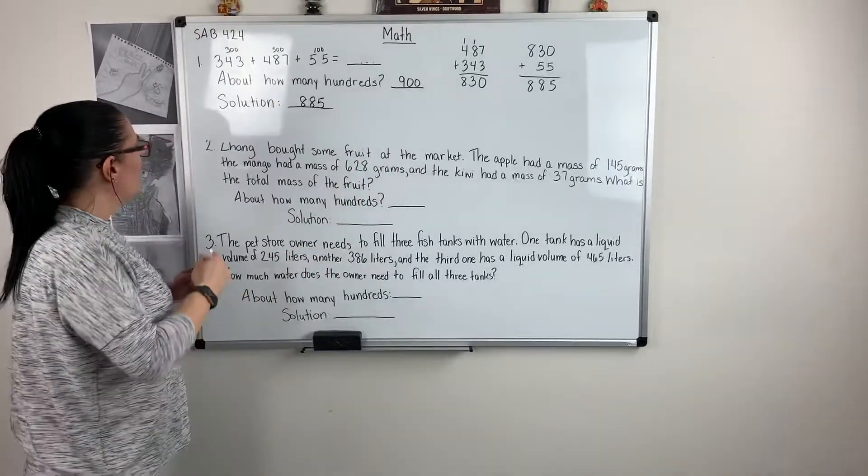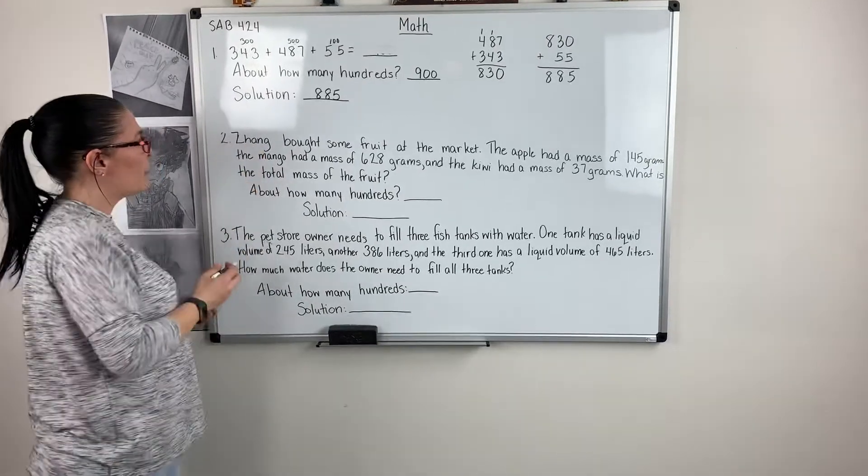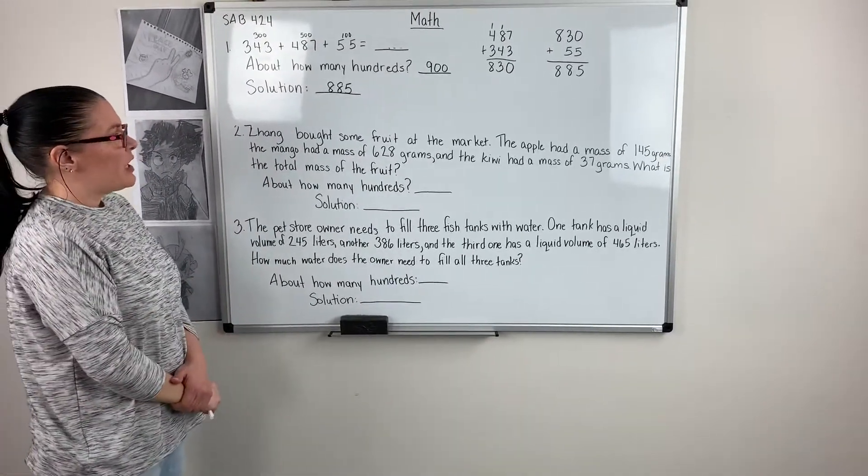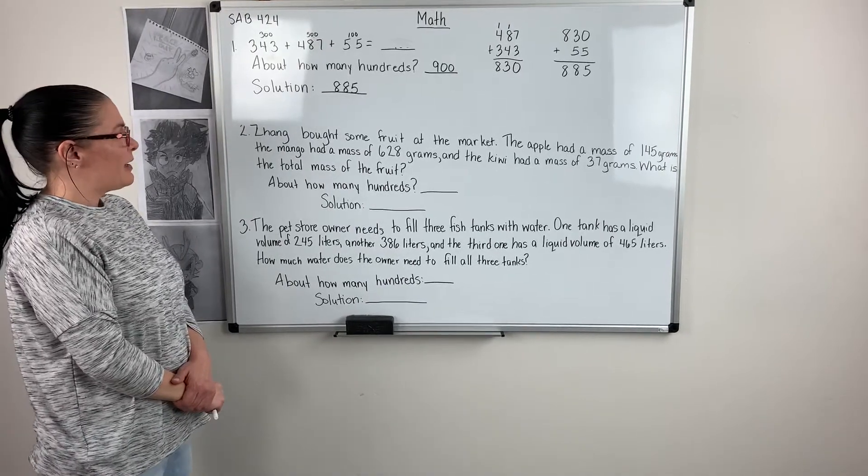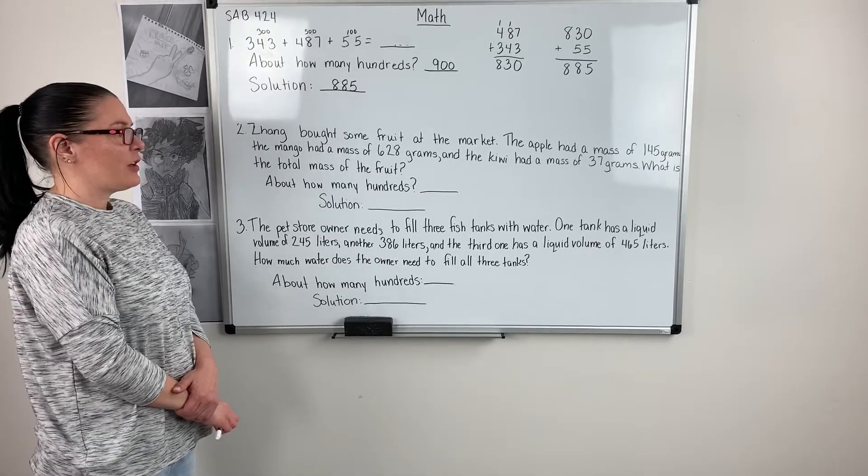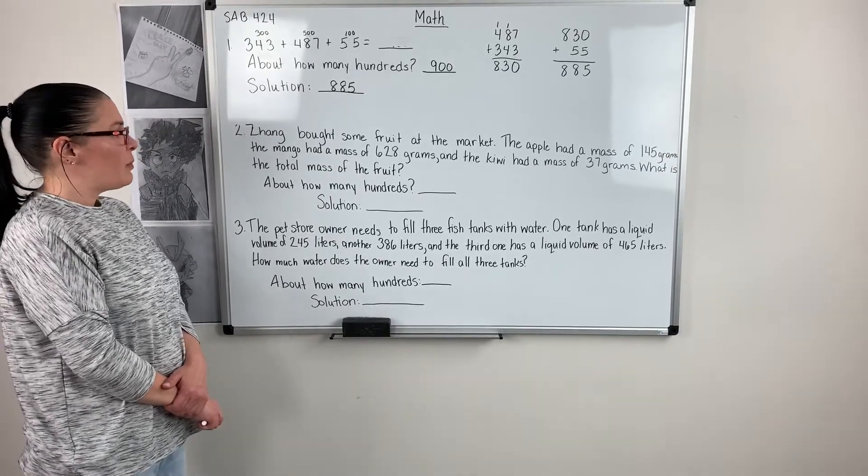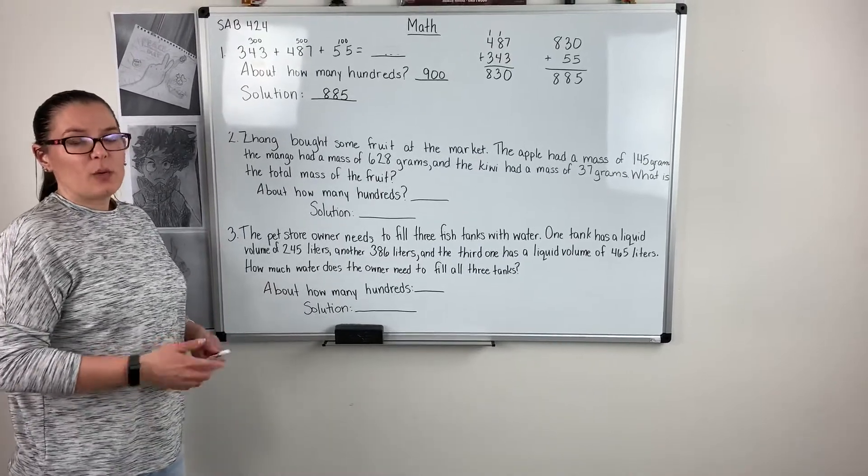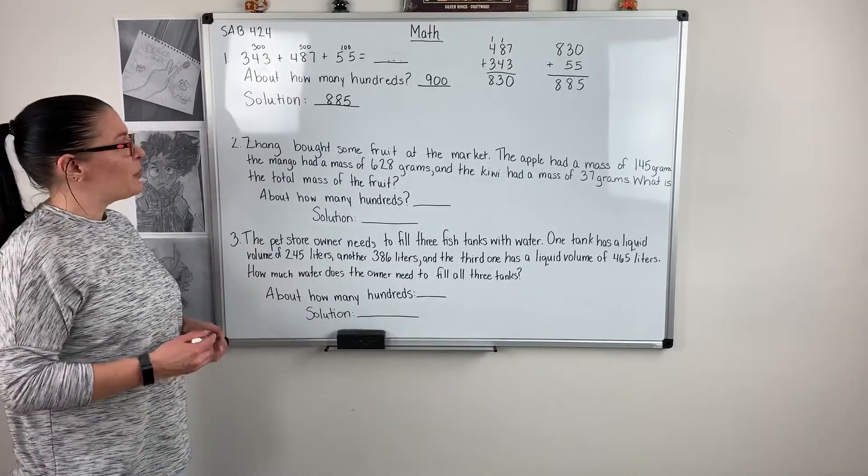Let's look at problem number two. It says Zhang bought some fruit at the market. The apple had a mass of 145 grams, the mango had a mass of 628 grams, and the kiwi had a mass of 37 grams. What is the total mass of the fruit? So again, they're asking for the total mass, so they want us to find out what all three numbers are together.